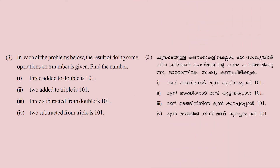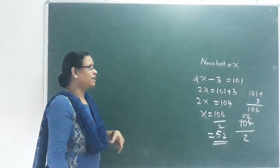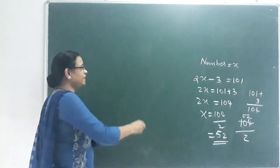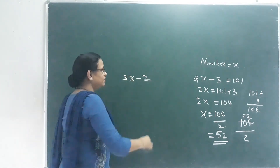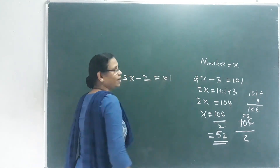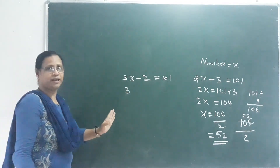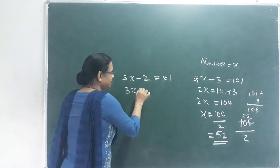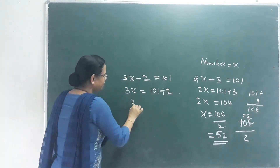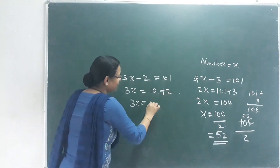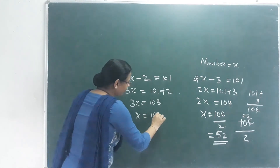Next: 2 subtracted from triple a number is 101. So 3x minus 2 equals 101. Adding 2 to both sides gives 3x equals 103. Then x equals 103 by 3.